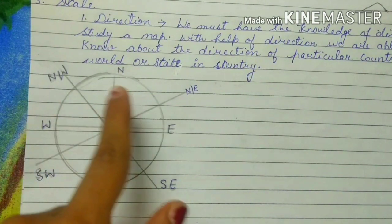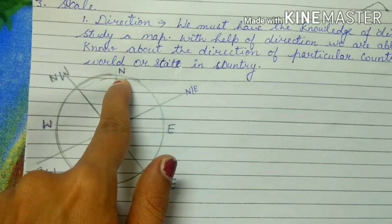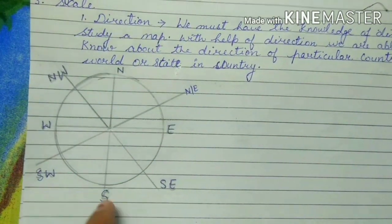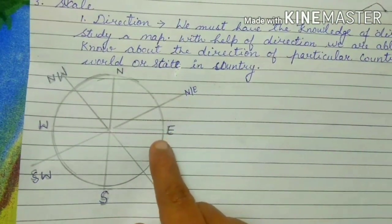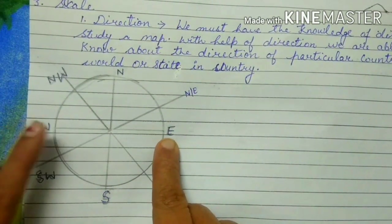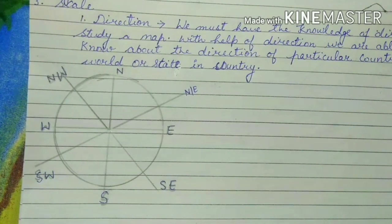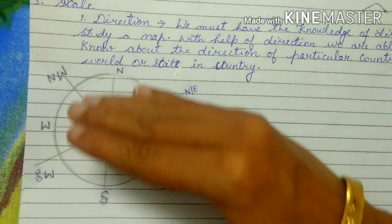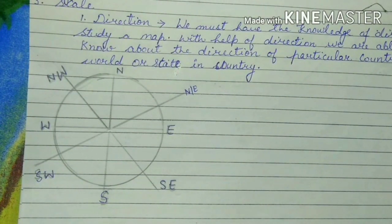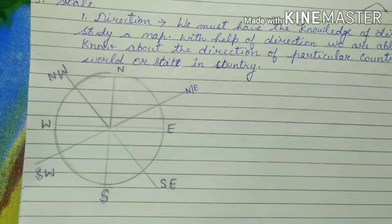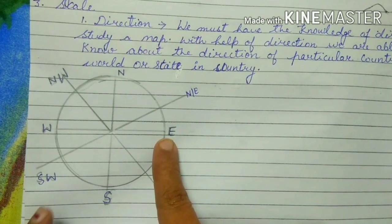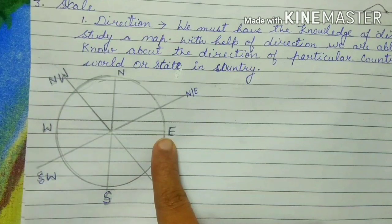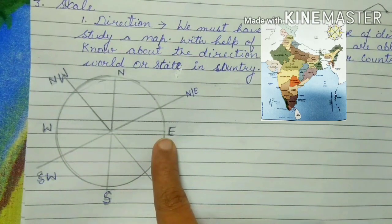On the top of a map there is north, on the bottom of a map there is south, on the right side of a map there is east, and on the left side there is west. This means that countries at the top are northern countries, countries at the bottom are southern countries, countries on the right side are eastern countries, and countries on the left side are western countries.